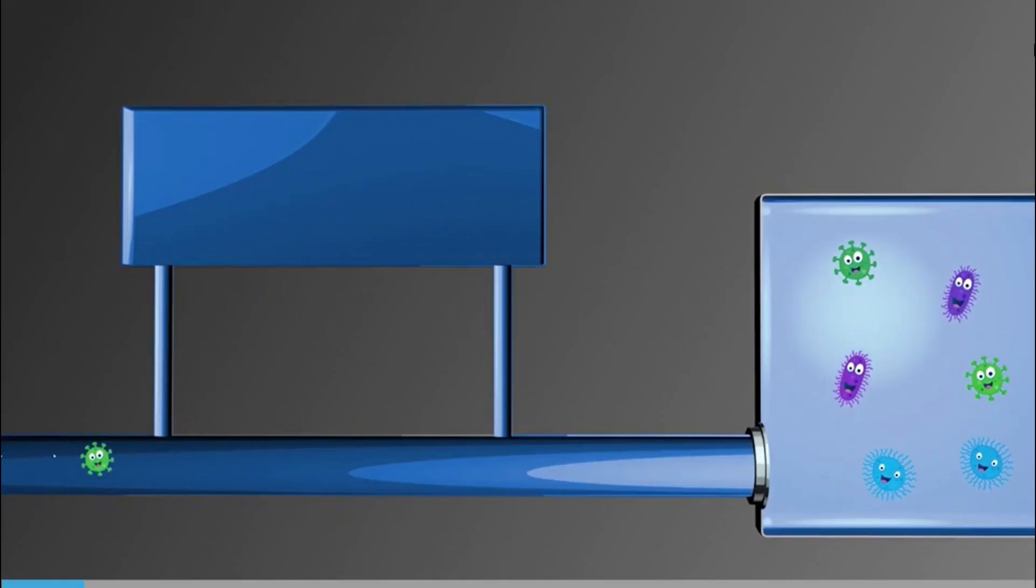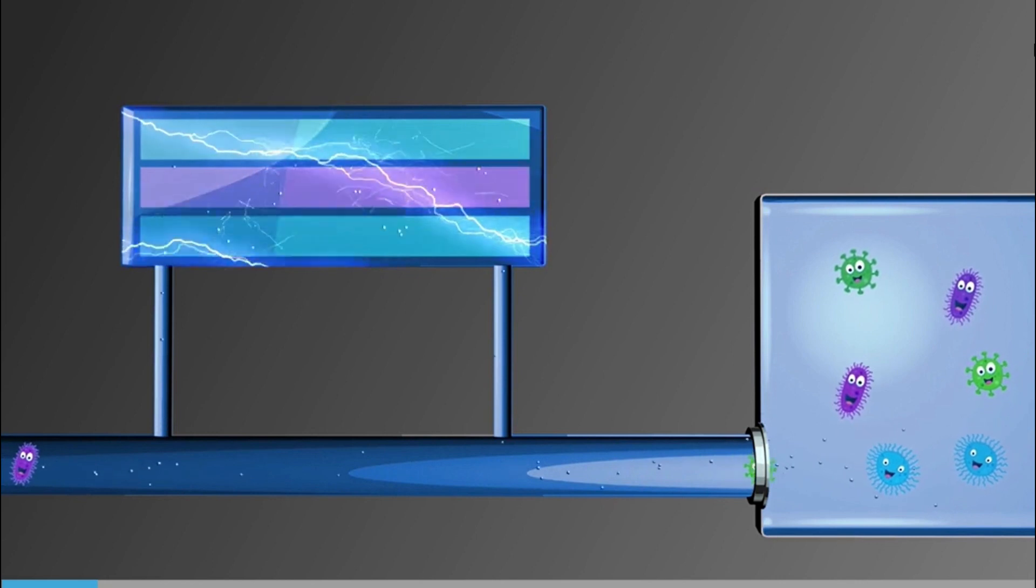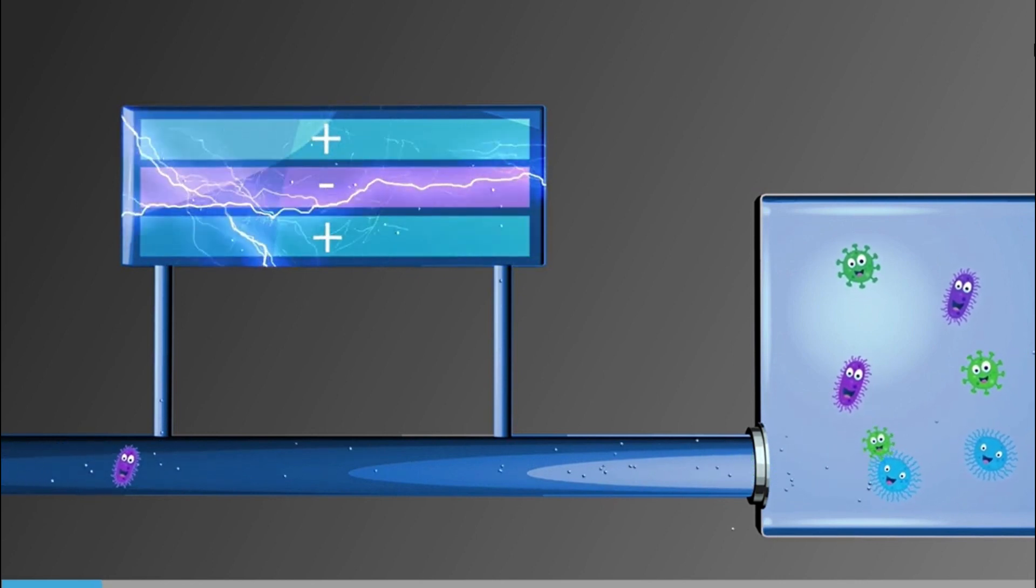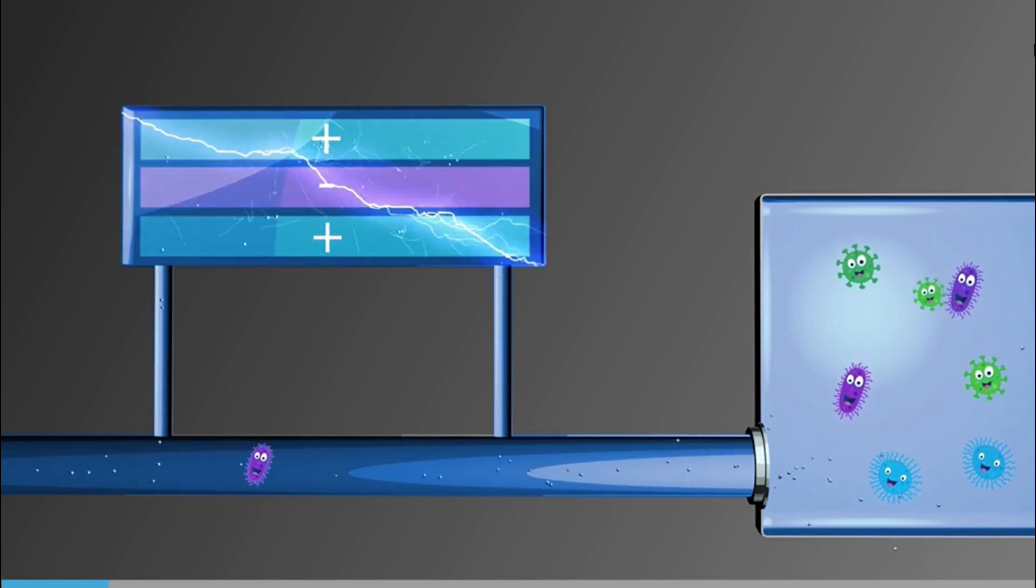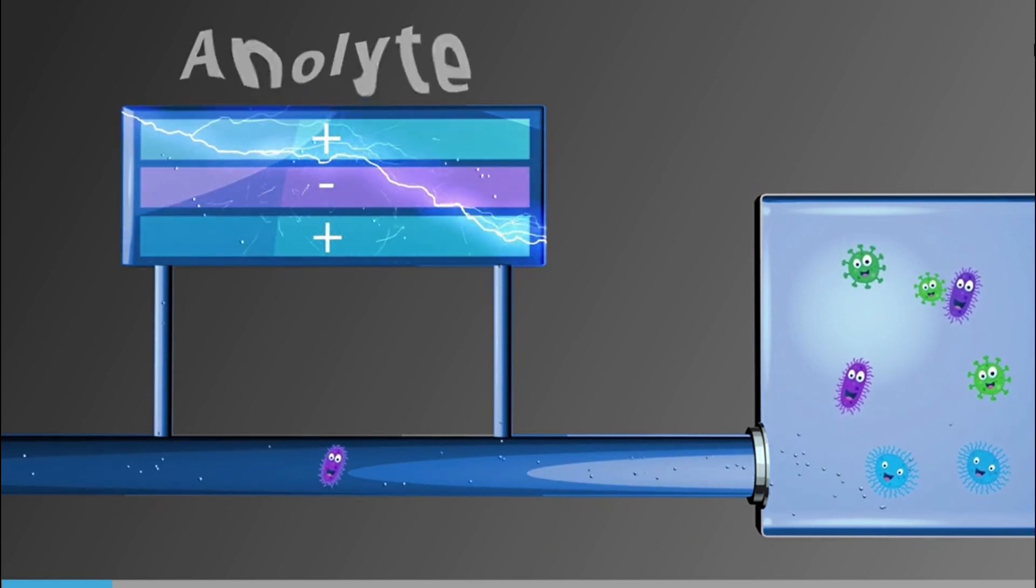In an electrolysis system, an oxidizing disinfectant can be produced in a process known as water activation. An electric current is applied to water in an electrolysis chamber. The water is broken down into an acidic biocide known as anolyte and an alkaline substance known as catholyte.